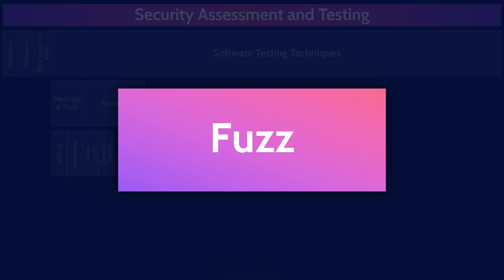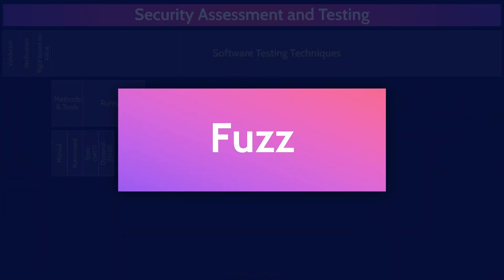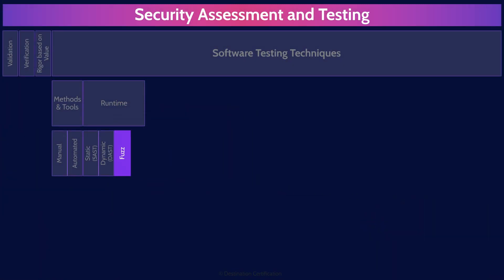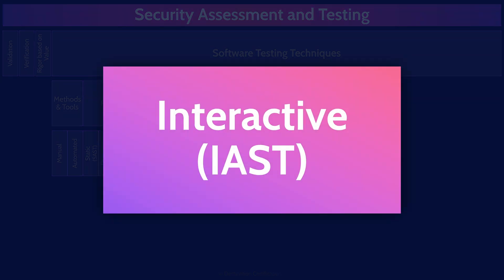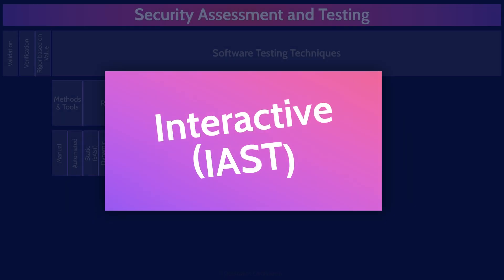Programmers are logical people — they expect logical input and provide logical output. If you throw chaos at a system, massive amounts of random data, you can identify all sorts of unexpected errors and vulnerabilities in code. That's fuzz testing. Interactive application security testing (IAST) involves a combination of both static and dynamic — testing is performed as the application is running, with access to the source code. These interactive tools are typically integrated into the software as agents or sensors to monitor the application in real time.